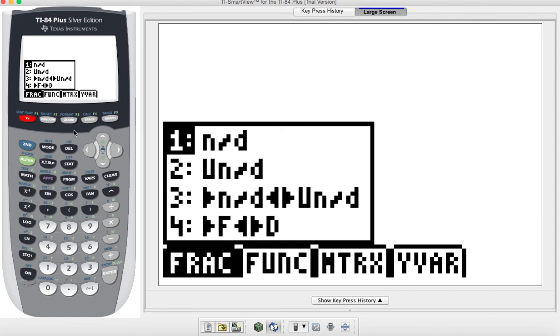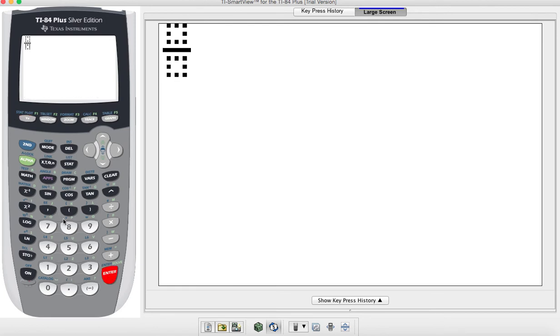So first of all, we're just going to select the first option and we'll make up a fraction. Let's say we want to use 5 eighths. We'll put a five on top, to get to the bottom just hit the arrow key down, and then to come off your fraction, hit the arrow key to the right.